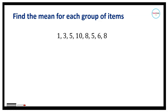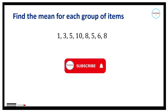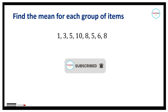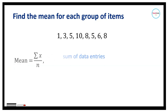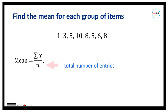Consider the following exercises. Find the mean for each group of data items. Number 1: find the mean for the data 1, 3, 5, 10, 8, 5, 6, 8. As a review, the mean is computed by adding all the data entries and dividing by the total number of data entries.